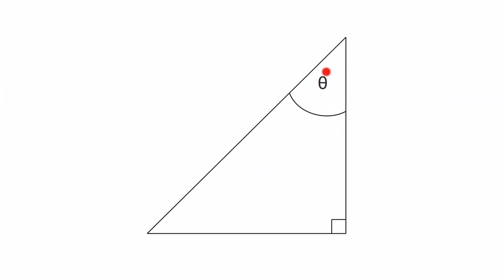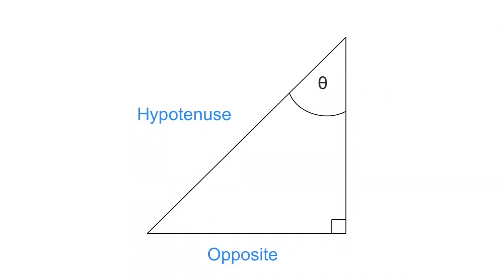Let's move that theta up to here. Our designated angle is now up top, which means that this stays the hypotenuse. Now here comes the changes. This side, which used to be the adjacent, is now the side that is opposite our theta or our designated angle. And this side over here, which once sat opposite our designated angle, is now sitting adjacent to our designated angle.